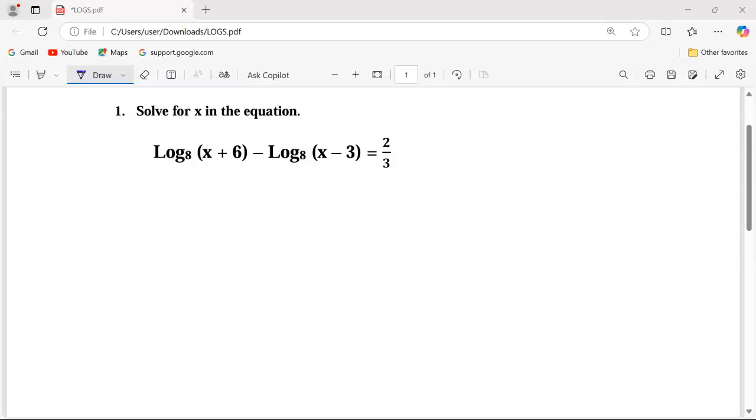The logarithm to base 8 of x plus 6 minus the logarithm to base 8 of x minus 3 equals 2 thirds. I'm going to rewrite my expression such that I have the log to base 8 of x plus 6, then minus the logarithm to base 8 of x minus 3. This is equivalent to 2 thirds.